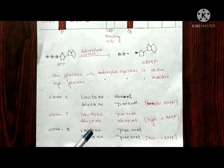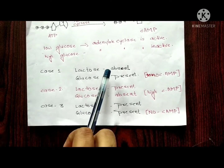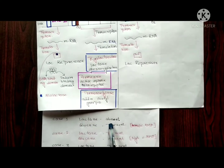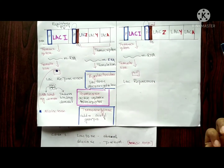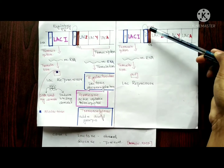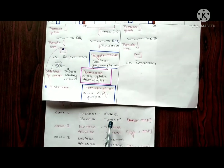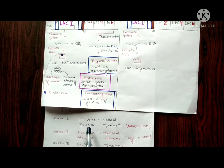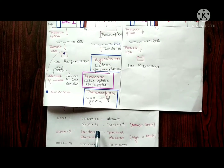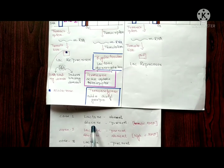Now let's look at some cases related to lactose and glucose. Case 1: when lactose is absent and glucose is present. Since lactose is absent, allolactose is also absent. The lac repressor binds to the operator, blocking RNA polymerase — transcription stops. Meanwhile, glucose is a simple sugar that bacteria can directly use as a source of energy, so the lac operon is not needed.